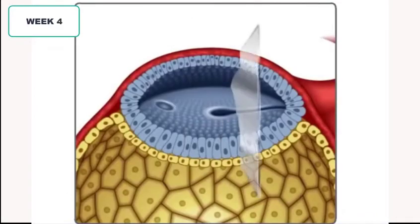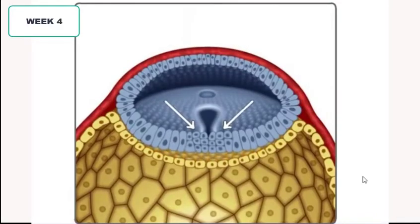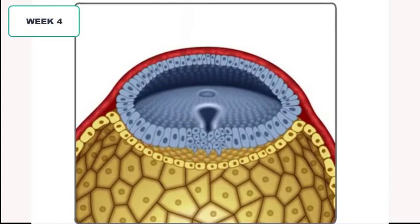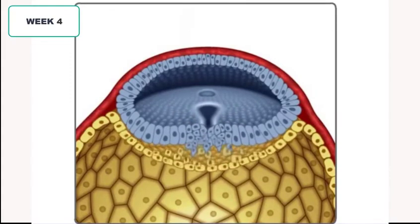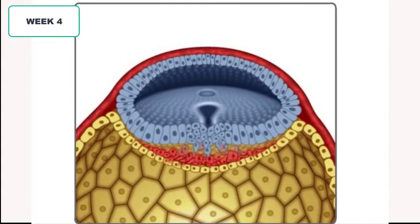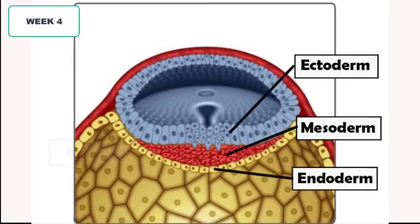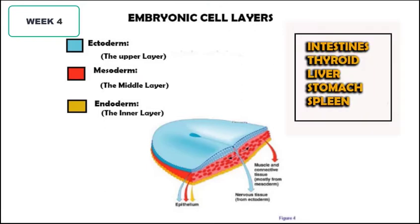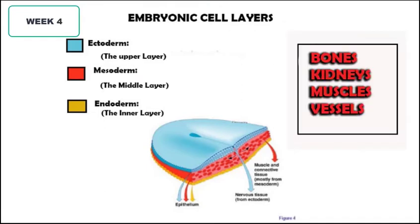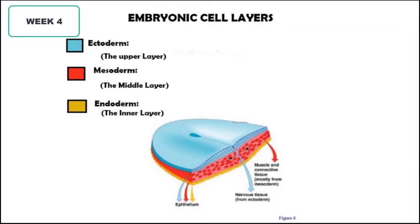The two layers separate and a new cell layer is rapidly formed in between, resulting in a trilaminal disc of three cell layers. The endoderm downward contains cells that will make the intestines, thyroid, liver, stomach, and pancreas. The mesoderm in between contains cells that will make the muscles, bones, kidneys, and vessels. The ectoderm upward is composed of cells that will give rise to the brain, skin, hair, and nerves.